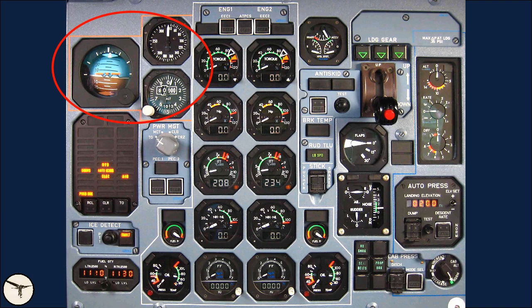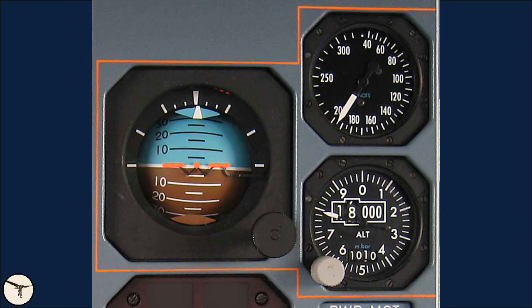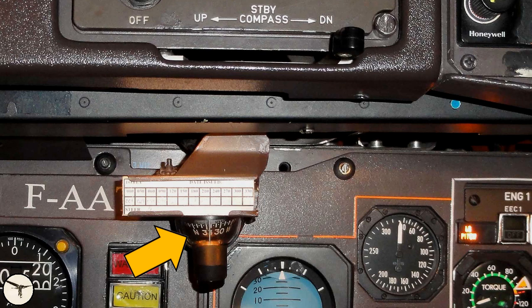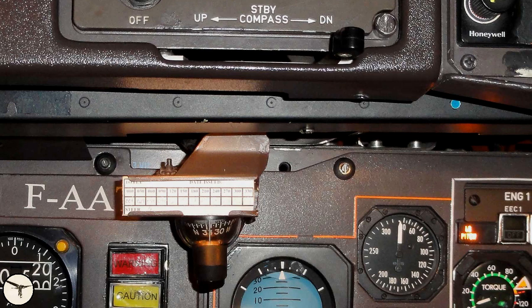Moving to the center panel, we start with the standby horizon — to erect it, you must pull the knob. The standby airspeed indicator and the standby altimeter are fully mechanical and directly connected to the respective pitot tube and static port. The standby compass is installed in the glareshield and drops down when you move the lever to DOWN. It has an internal light, is not dampened, and requires you to fly straight and level to read the correct heading. Note: the magnetic compass is calibrated to show correct heading when both DC generators are offline.